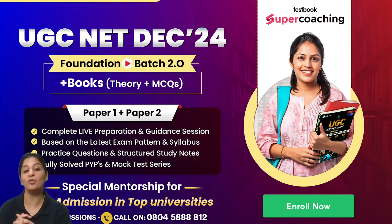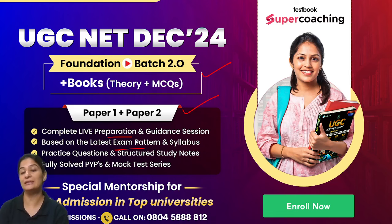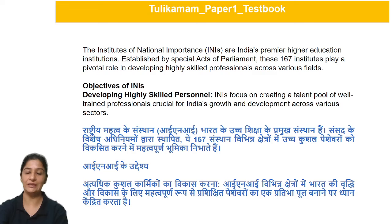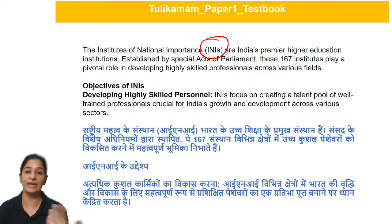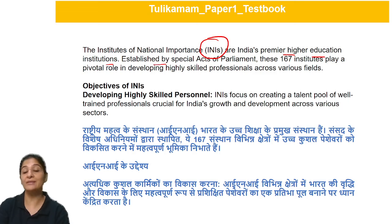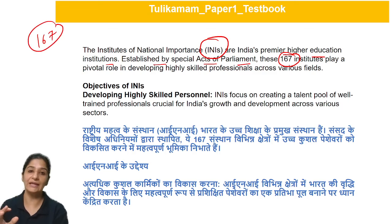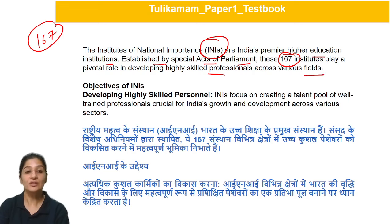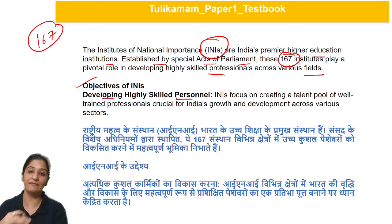Let's understand what INI includes. INI is an Institution of National Importance — the pride of India. India's primary higher education institutions are connected with this coordinator. This is established by Special Acts of Parliament. There are 167 SAI institutions identified. They play a very big role in India's main goal — training professionals across many fields. The main objective of INI is to enhance professionals and develop them to contribute to the country's growth.